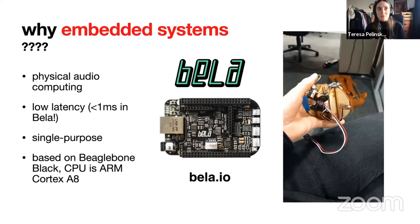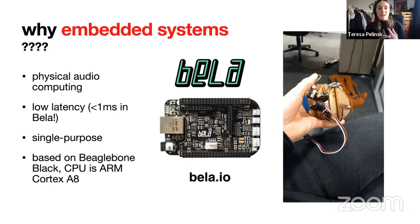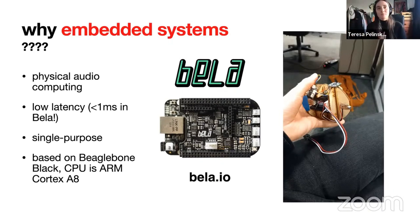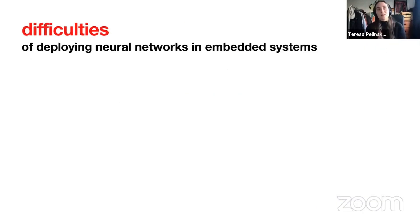Another great thing about these platforms is you can put them inside an instrument and just leave them there. Unlike a laptop that you also use for work and movies — where OS updates break things — you can purpose an embedded system for a specific function and just leave it, making it more reliable for live performance. Bela is based on the BeagleBone Black. The CPU is an ARM Cortex A8, which is a very limited CPU, and we'll see what difficulties arise from having such limited resources when trying to run neural networks.